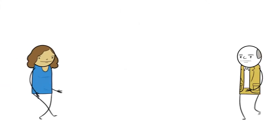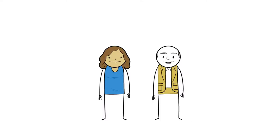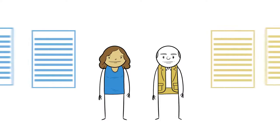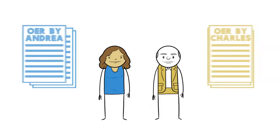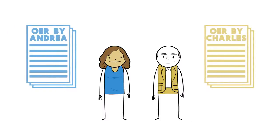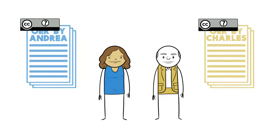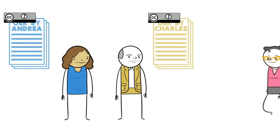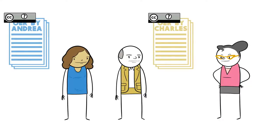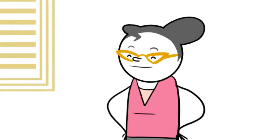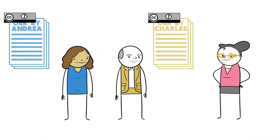This is Andrea and Charles. They are each developing their own chapters of an open textbook to be licensed separately. When they have questions about which license to use, they ask Beth, the scholarly communications librarian. Beth is considered the leading expert on campus in Creative Commons licensing, and most people think she's pretty cool. Andrea and Charles would agree.